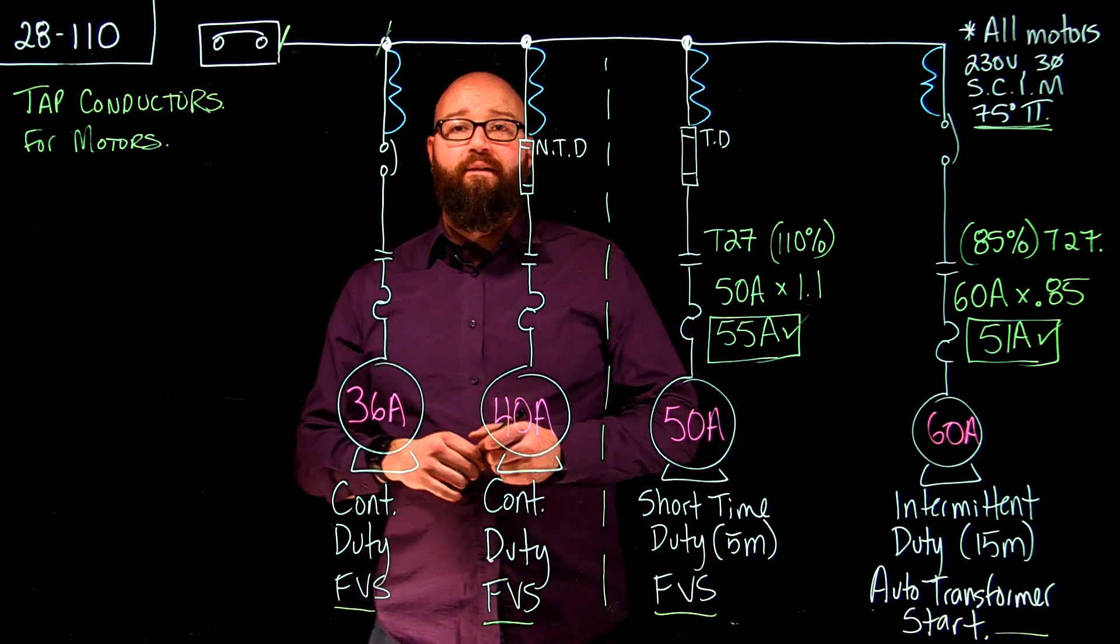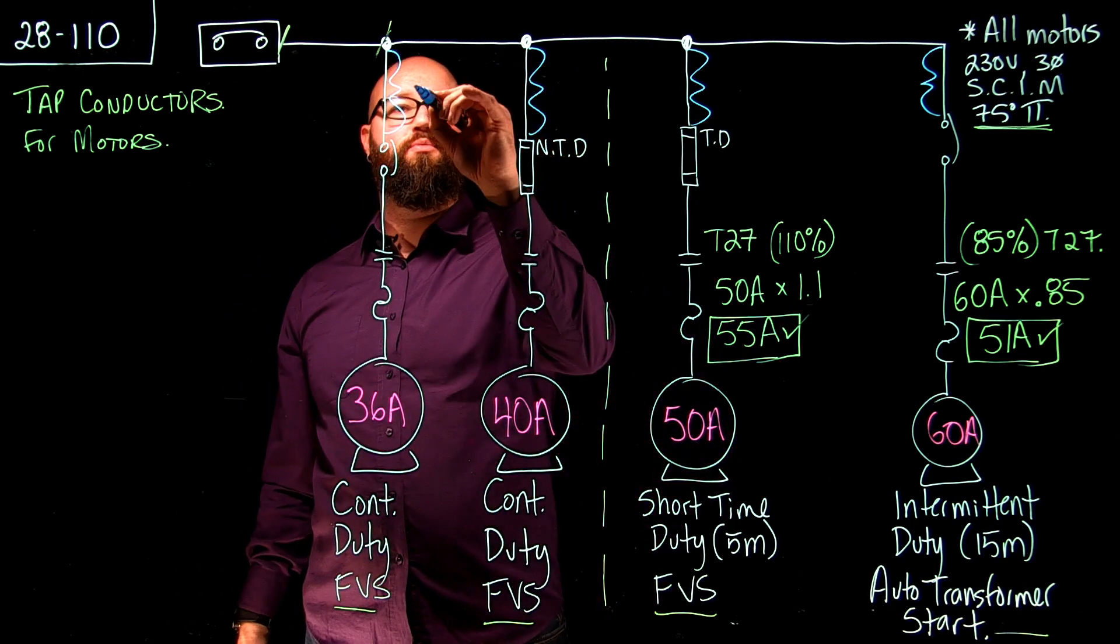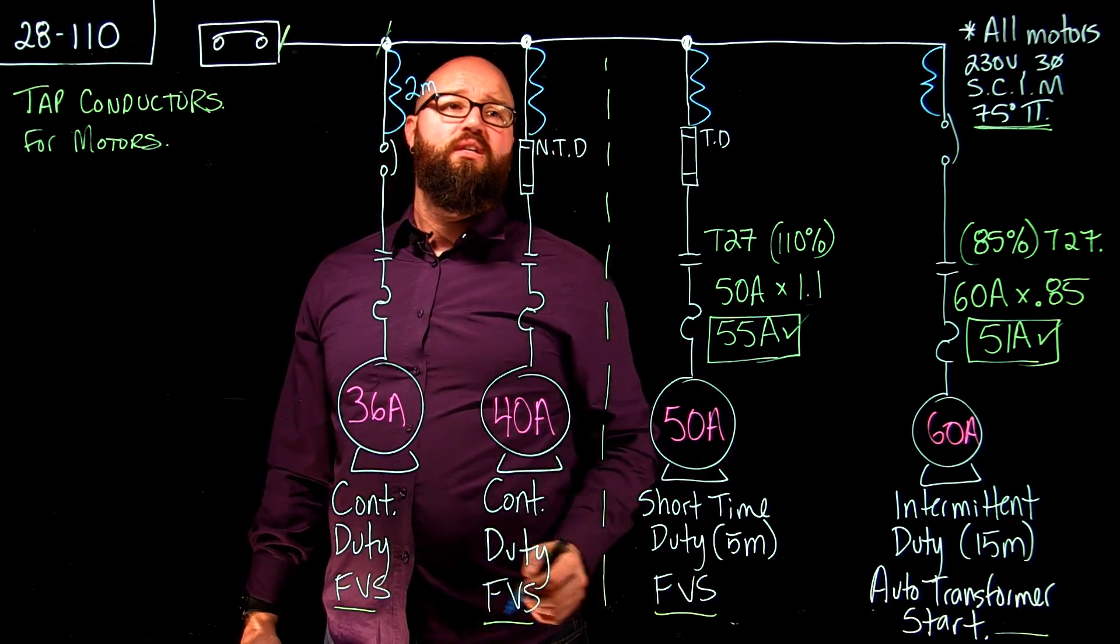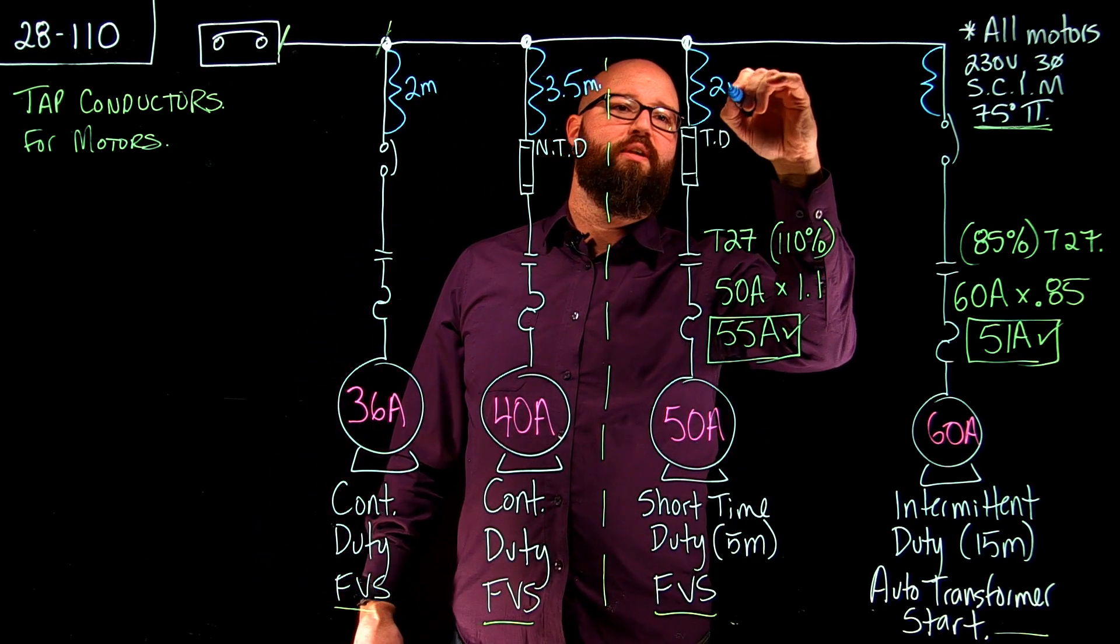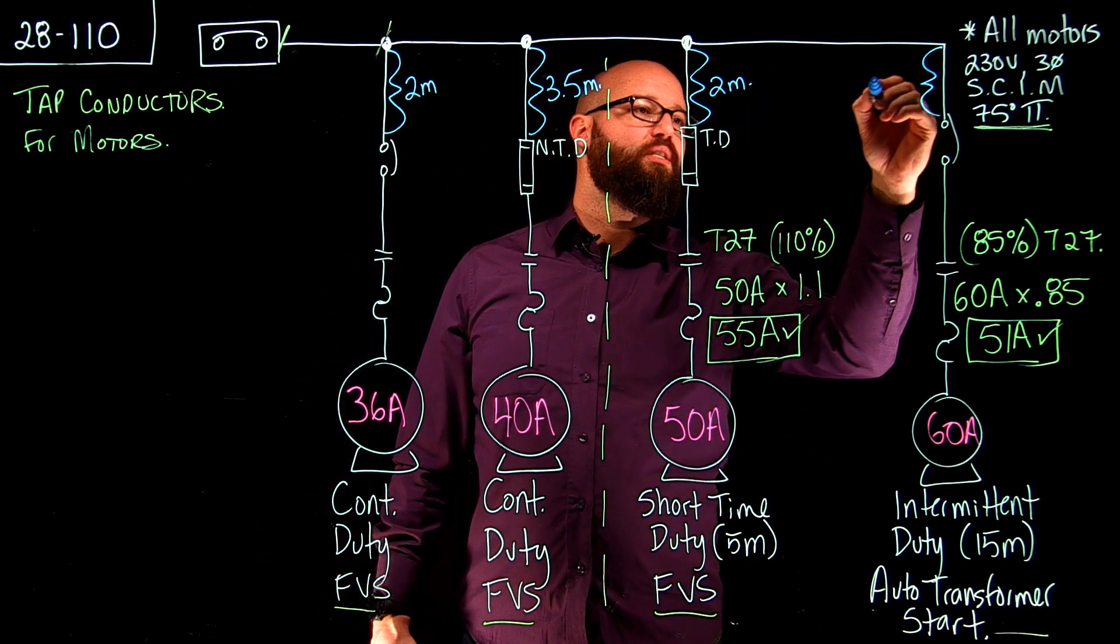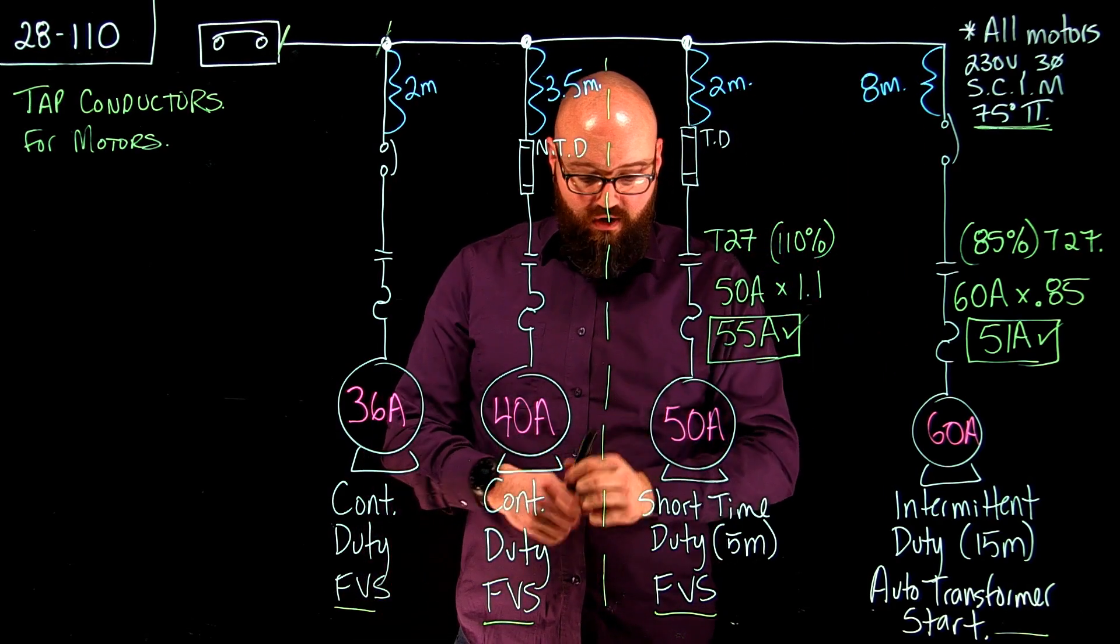So we're going to put a couple of numbers on here just so we have some different lengths of tap conductors. This one we're going to say is 2 meters. This one we're going to say is 3.5 meters. This one we'll say is 2 meters as well. And this one we're going to say 8 meters. Let's go 8 meters because that's a fair distance there.